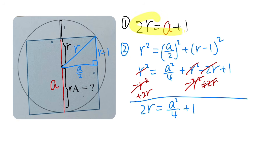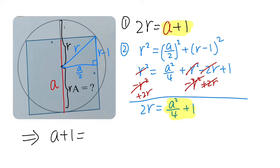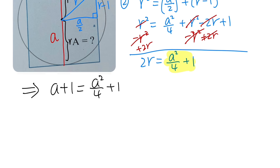Now we have two expressions for 2r: from the first equation, 2r = a + 1, and from the second, 2r = a²/4 + 1. Setting them equal: a + 1 = a²/4 + 1. Now we just need to solve for a, then square it to get the area.